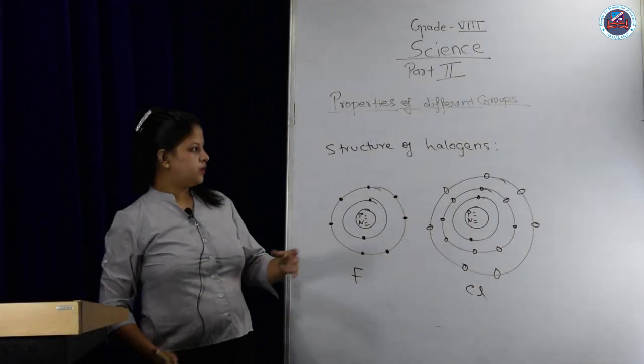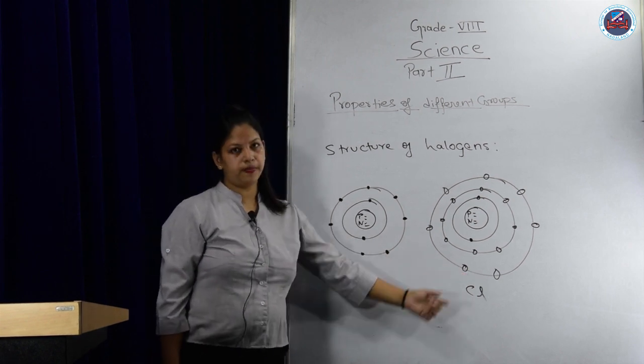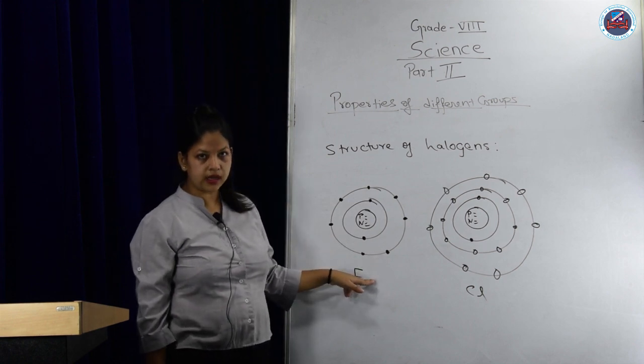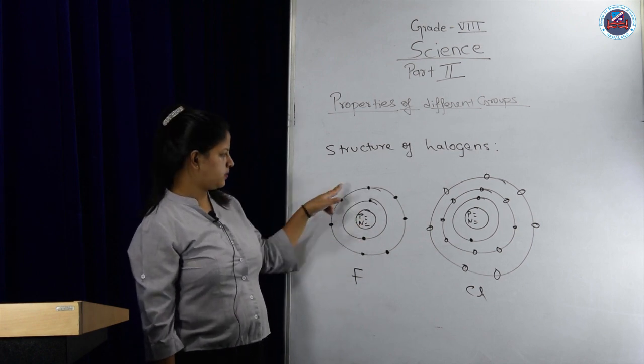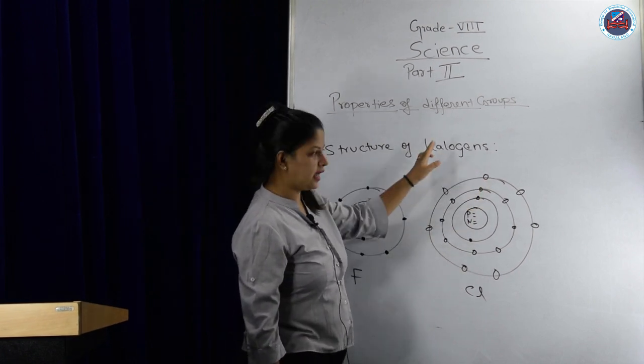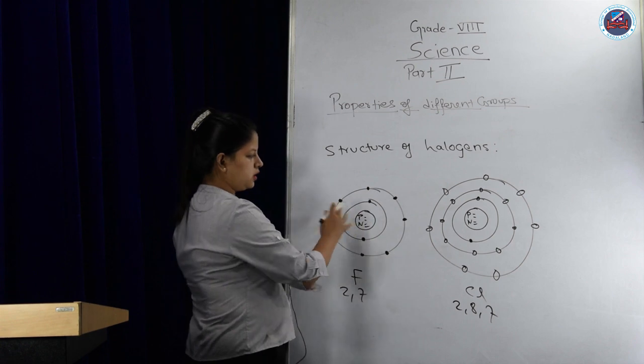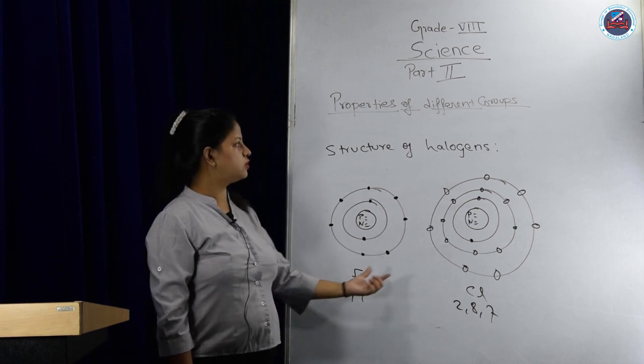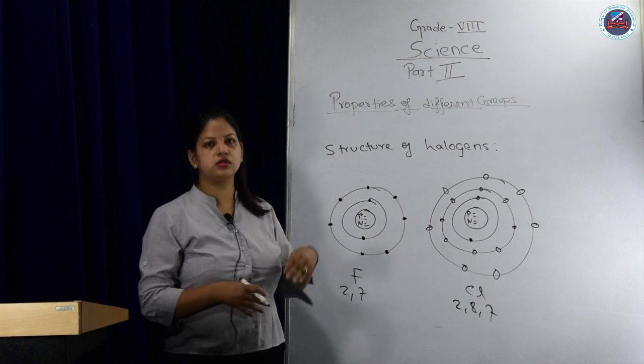When we compare the structure of halogens, this is fluorine, this is chlorine. For fluorine, atomic number is 9, so 9 electrons are there. First shell completed with 2, next remaining is 7. Here also, first 2 electrons, second 8, and remaining 7 in the third. The last shell contains 7 electrons in each.